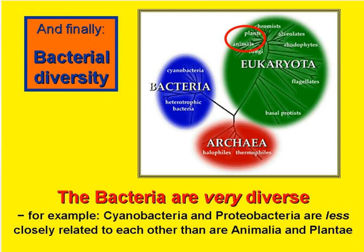Finally, a word on diversity in the domain Bacteria. There is enormous diversity throughout this domain. For example, the cyanobacteria and the proteobacteria are less closely related to each other than our plants and animals — strictly the Plantae and the Animalia, the two main kingdoms we used to group all life into. Put another way, we're closer genetically to a flowering plant or an oak tree than cyanobacteria are to proteobacteria.